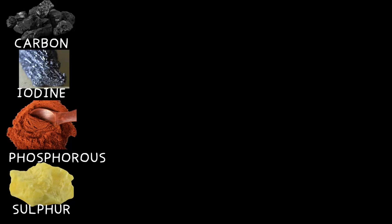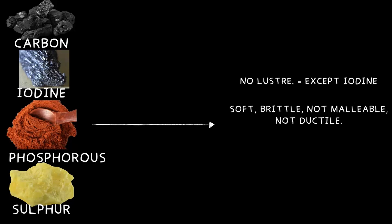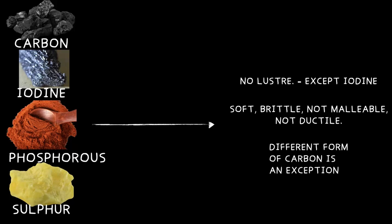Let's do a quick recap. Non-metals do not have metallic luster, except for iodine. They are soft, brittle, non-malleable, and non-ductile — very different from metals. There is an exception though: different forms of carbon, which we'll explore in the next video. We are not done yet — there are still a few more properties to check: electrical conductivity, thermal conductivity, and sonority, which we'll be exploring in the next video.